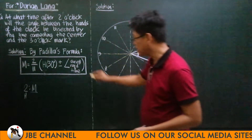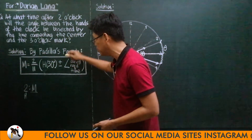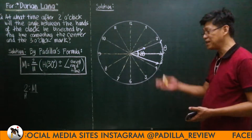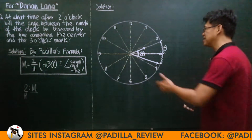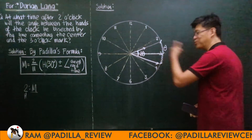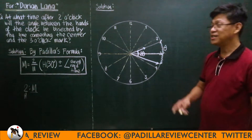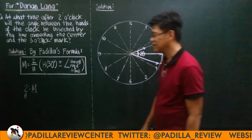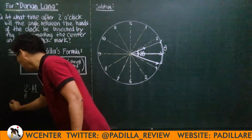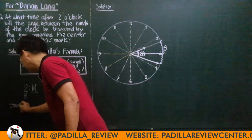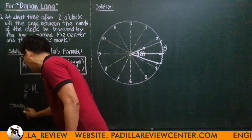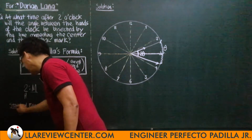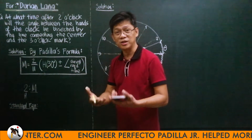If I knew 2 theta — that total angle value — I could readily solve M using Padilla's formula. The problem is, 2 theta is unknown. So in this situation, we will use the conventional solution — the standard equation you will find in all books.